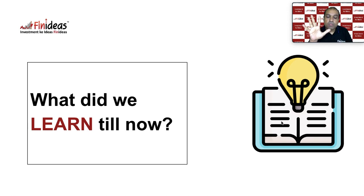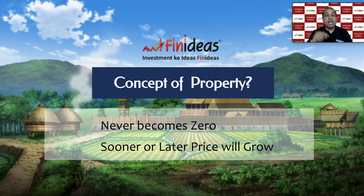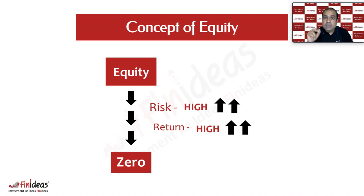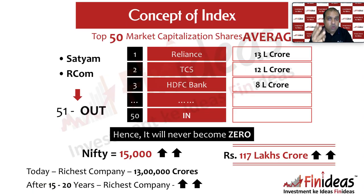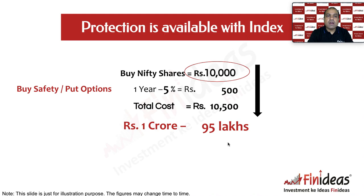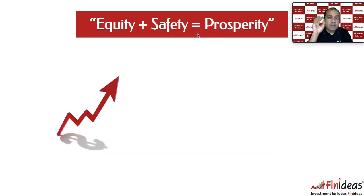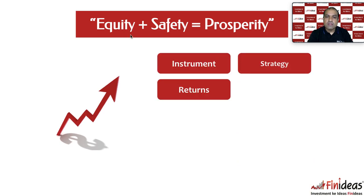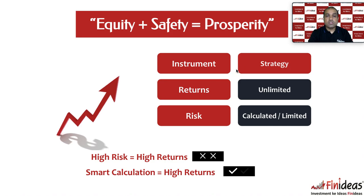We learned five learnings till now. Learning number one: we understood the concept of property and found that investors get two confidence — it can't become zero and sooner or later it rises. Learning number two: we found the concept of equity and understood that equity doesn't give this kind of confidence; if we select the wrong stock, our money can become zero. Learning number three: we got the solution — the concept of index. Because the index is the average of top 50 stocks, it cannot become zero and sooner or later it rises. Then we learned there is availability of protection with index. And finally, we learned the concept: equity plus safety makes prosperity. When we added safety with equity, we enhanced our returns and reduced our risk.